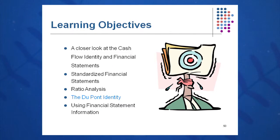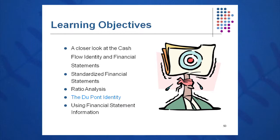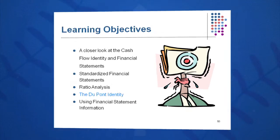Return on equity — how do we calculate it? It's net income divided by equity, and there's not a real lot there to get your hands around if you're having a problem with your ROE. If your return on equity is going down, you want to know how to move it in the right direction. You can look at increasing your net income or decreasing your equity, but really you don't have a lot of things you can manage or change there.